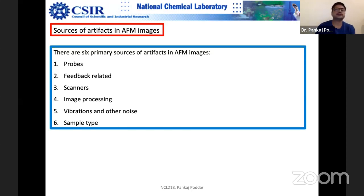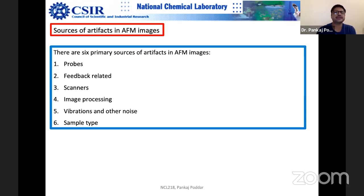The final source is sample type. Your sample can also create lots of artifacts. In fact, all these points are equally important. Even the last point — sample type — creates a lot of problems because if you have a bad sample, that can create contamination problems. So probe contamination is linked with sample type; sources one and six are linked quite closely.